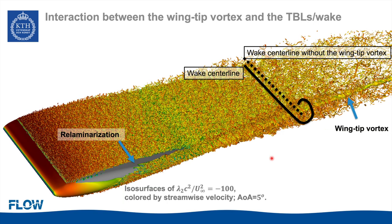In addition to the mostly inviscid effects discussed so far, there is also a very strong interaction between the vortex, the boundary layer, and the wake. This includes non-equilibrium and three-dimensionality effects due to the imposed pressure gradient and rotation of the wingtip vortex, a local relaminarization of the boundary layer on the suction side near the vortex formation region, as well as a strong interaction between the wake and the wingtip vortex in the form of shear layer roll-up or wake roll-up around the wingtip vortex.